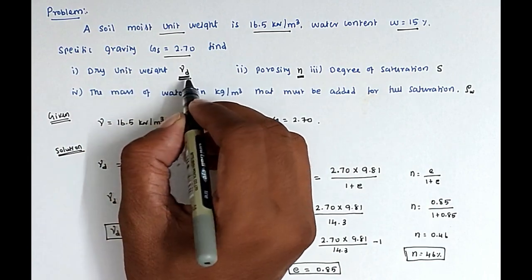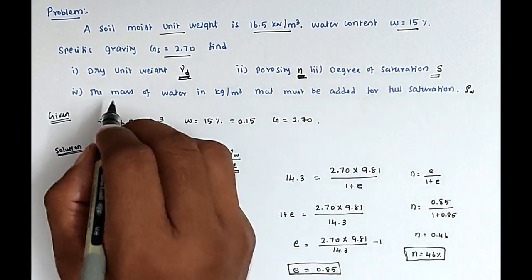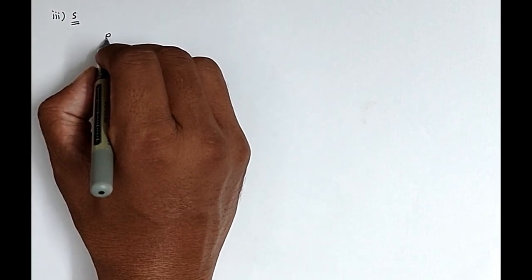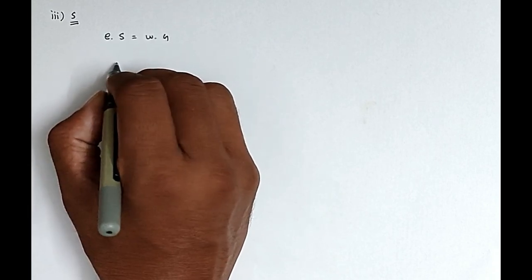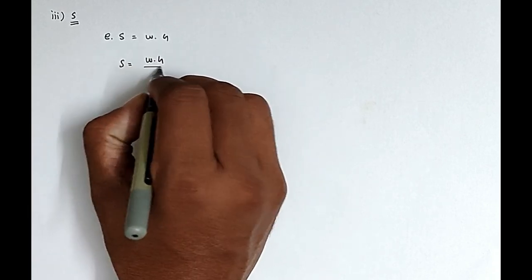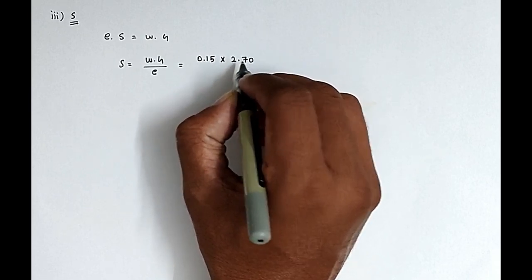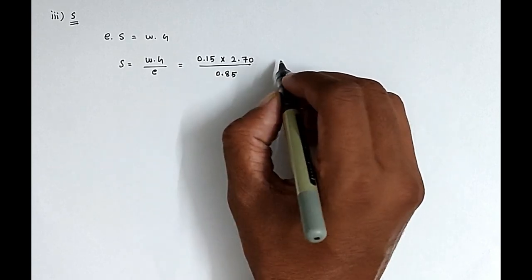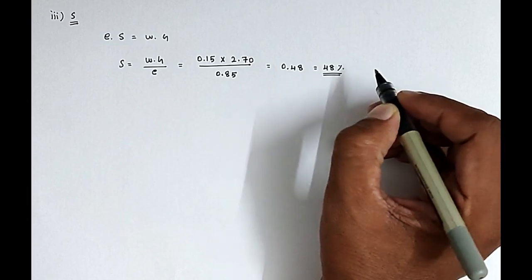We found the γD value and the porosity value. Now we have to find out the degree of saturation S. Using the formula E·S = W·G, so S = W·G / E = 0.15 × 2.70 / 0.85 = 0.48, that is 48%. This is the answer for the third question.